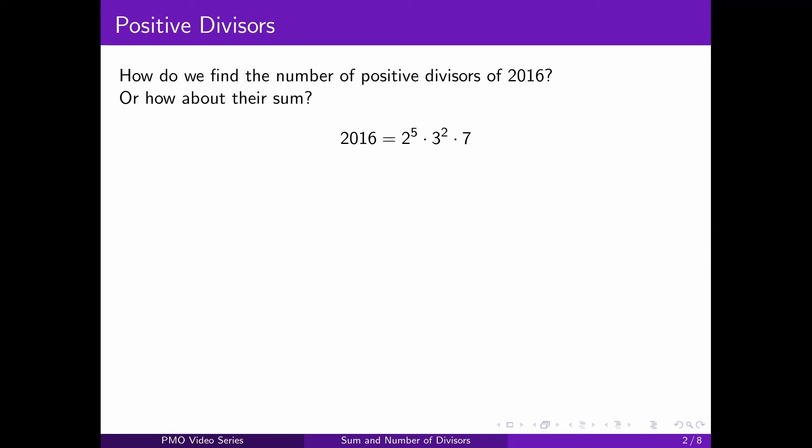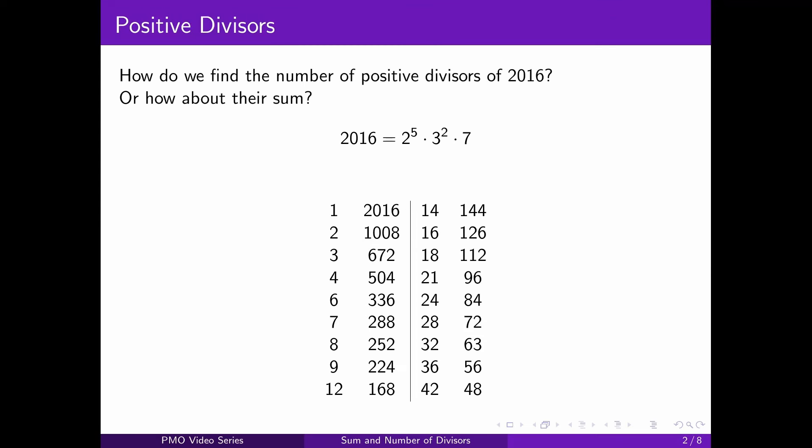So let's try something else. Maybe you could list out all the divisors using the two-column method. In the first column, you start from one and work up — one, two, three, four, five. Every time you get a divisor of 2016, you take note of that number and also take note of the quotient in the other column when you divide 2016 by the first number. By doing that, you can systematically get all the divisors of 2016.